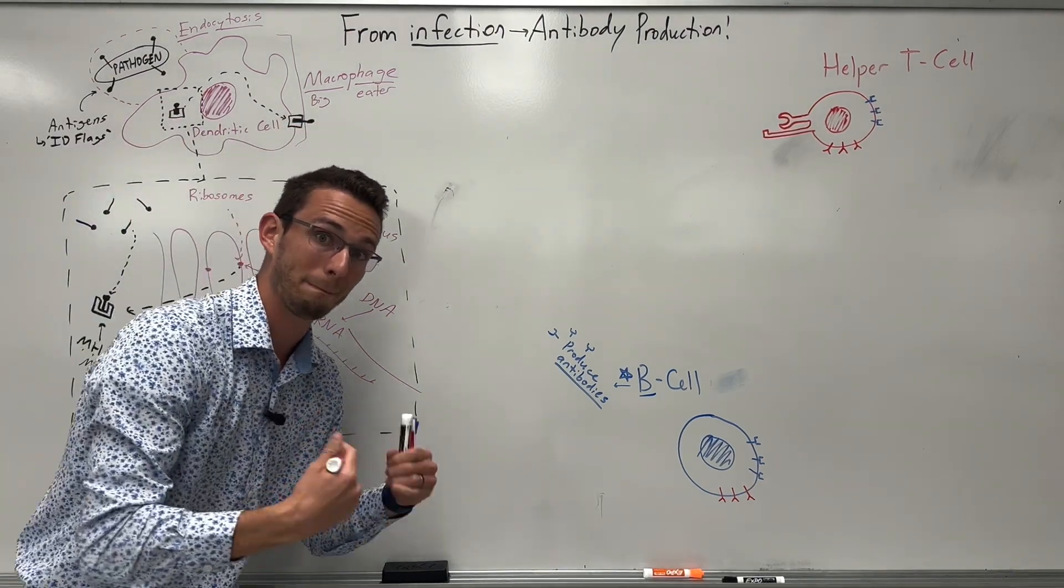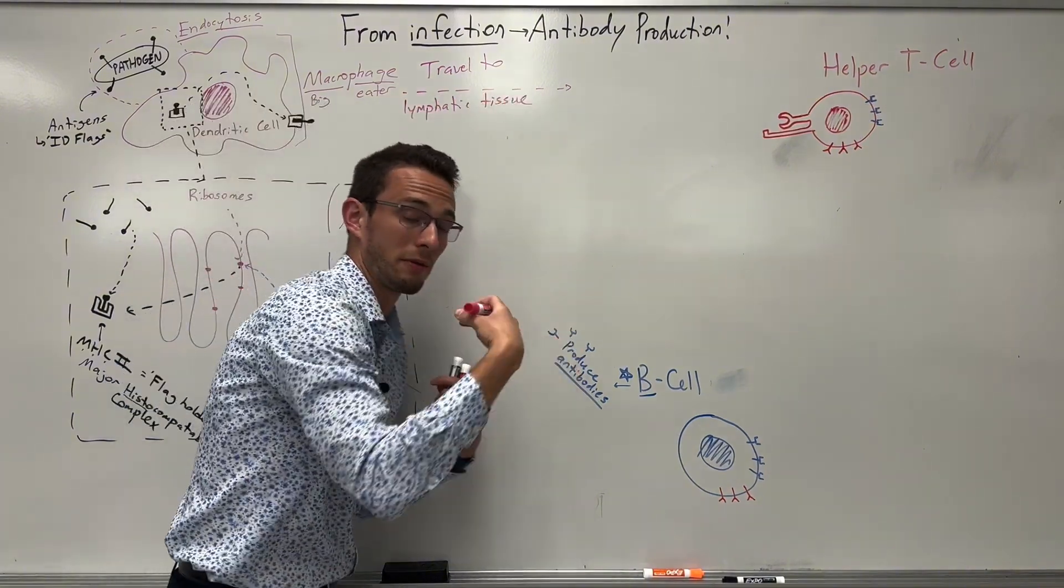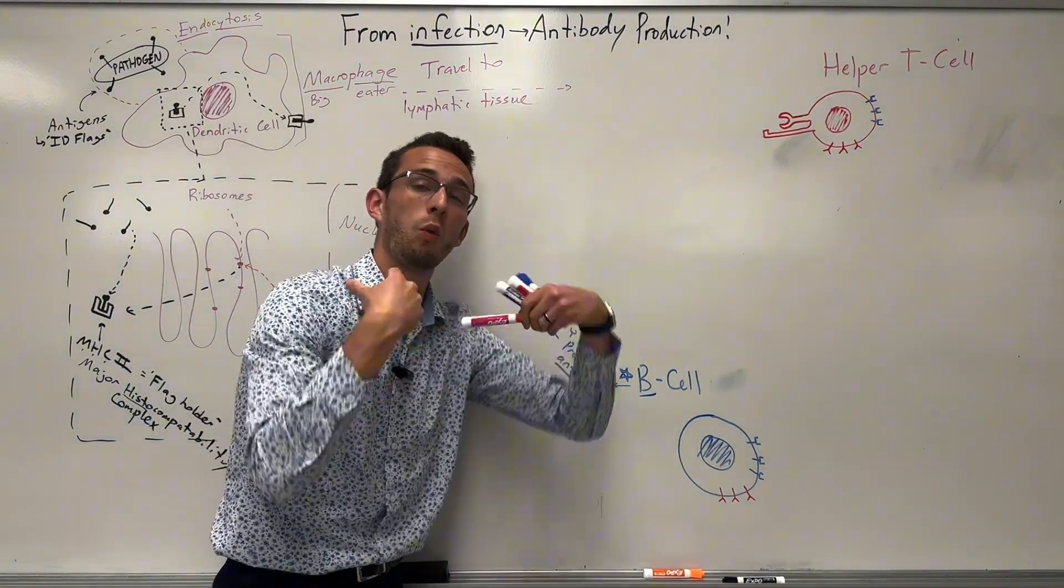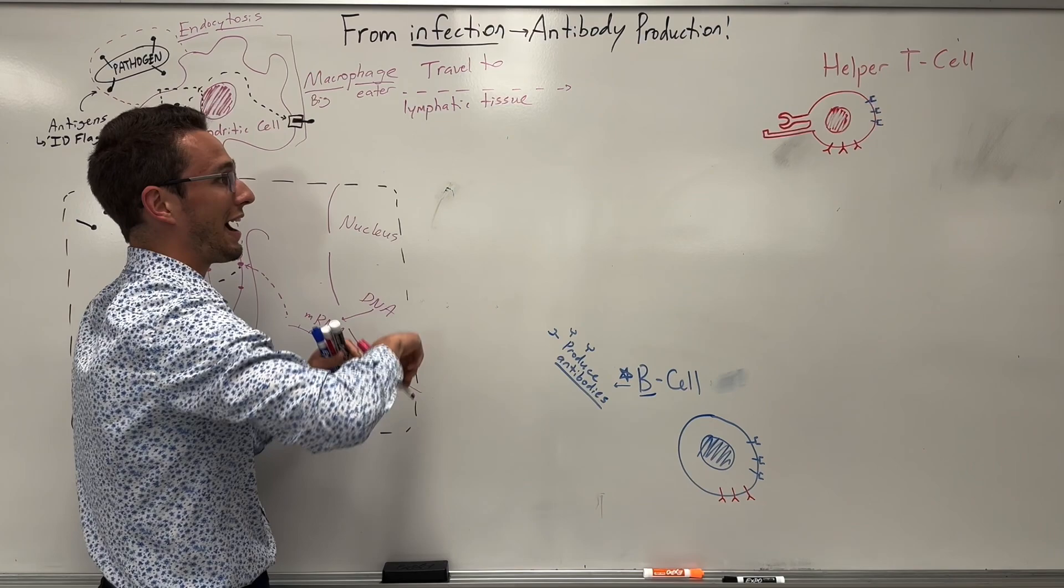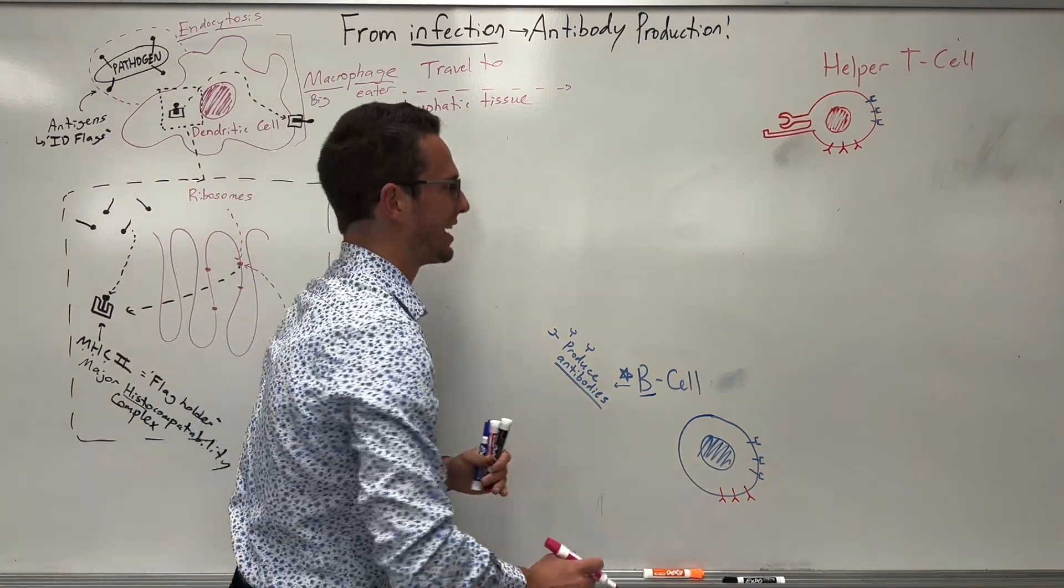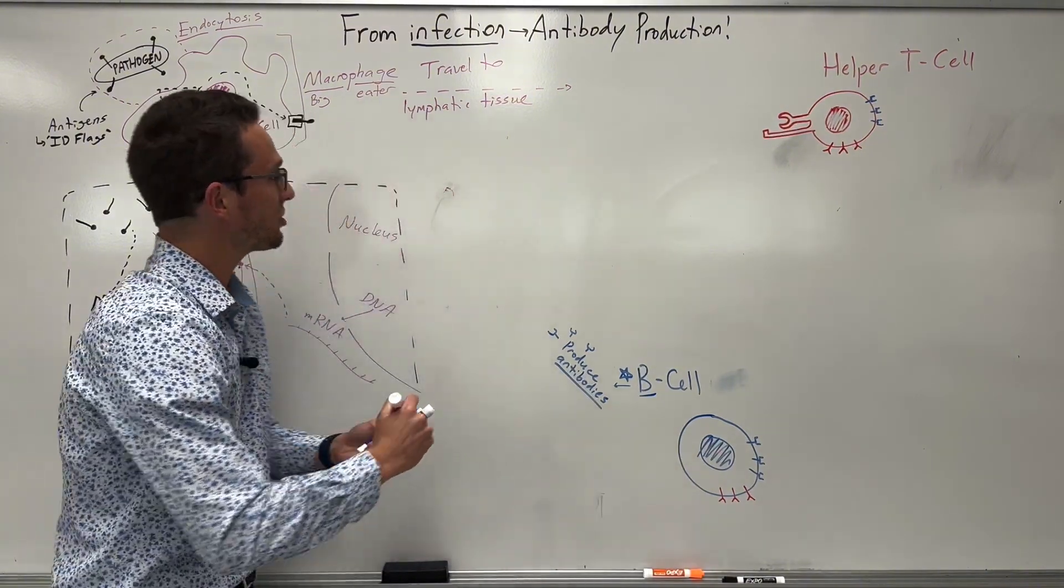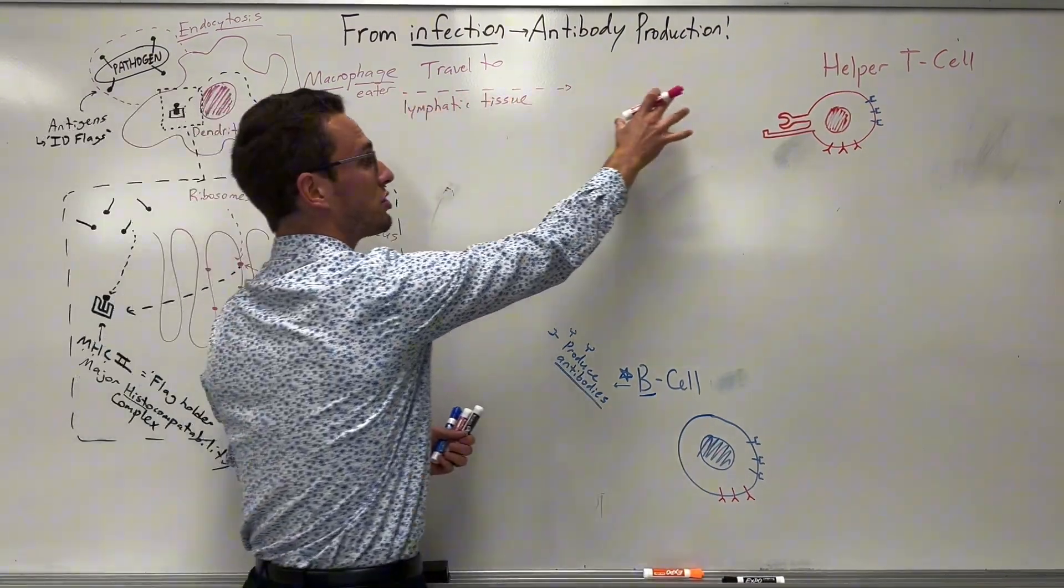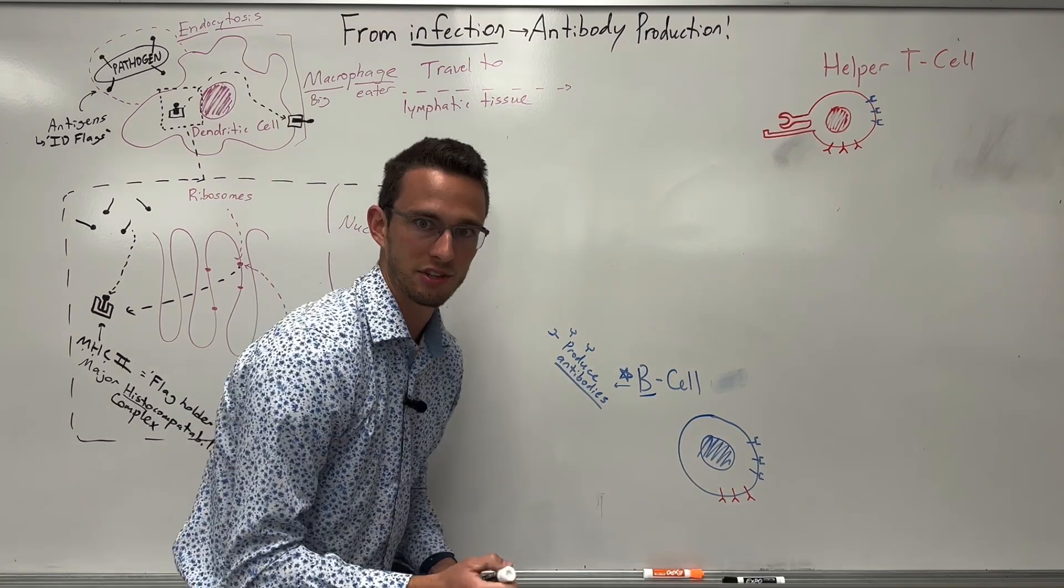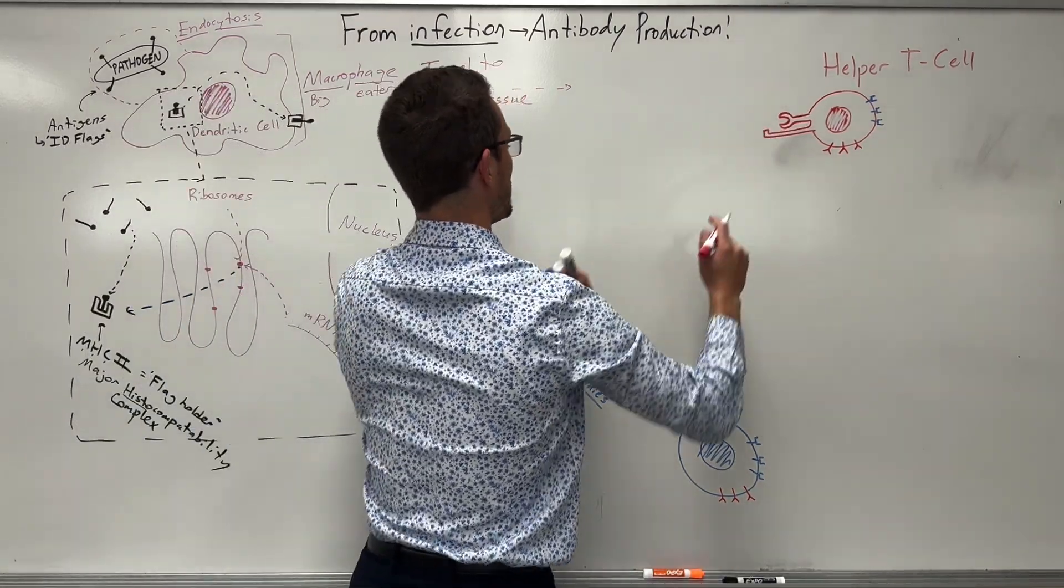So keep that in mind. So once this dendritic cell's eaten that pathogen, processed it out, put it on the outside, it's actually going to travel or migrate to lymphatic tissue. This is a part of your lymphatic system. If you want to learn more about that, you can learn about it here. But one thing about the lymphatic tissue is that we have lymphocytes in the lymphatic tissue. What an idea. And the lymphocytes' names are either T cells or B cells. So we're taking this MHC2 antigen complex to some cells that can really help us fight off the pathogen. How does that work? Well, I'm going to draw that dendritic cell again over here, interacting with the helper T cell.